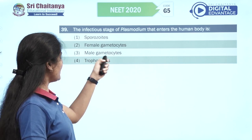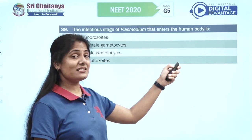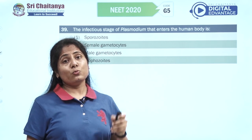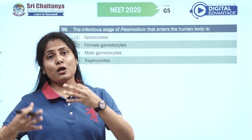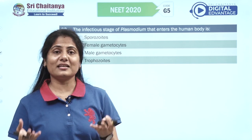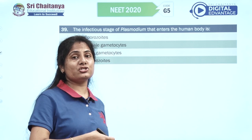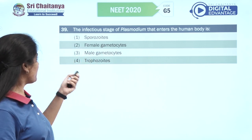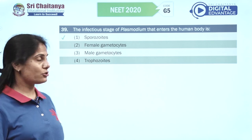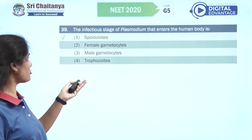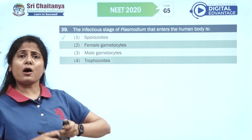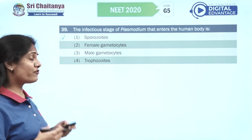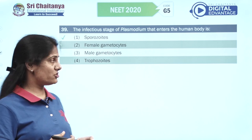The infectious stage of Plasmodium that enters the human body — an easy question. When a mosquito bites you, sporozoites enter your body first, reaching the liver in about half an hour. Sporozoites is your right option. Female and male gametocytes form much later after entering the human body. Trophozoite is the active feeding stage.